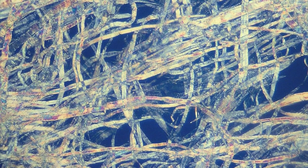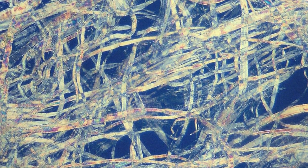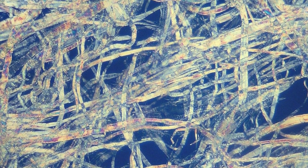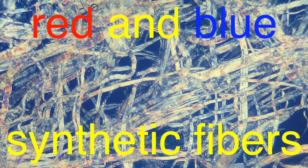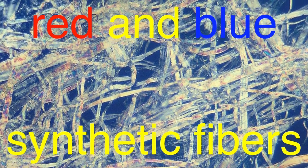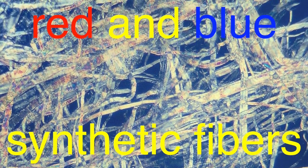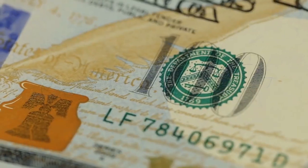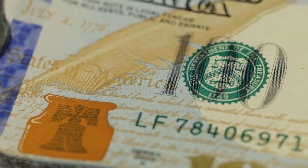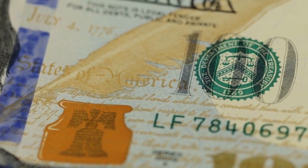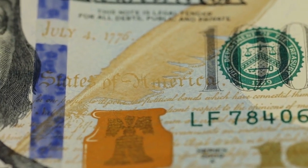The fibers used in this special paper are also embedded with security features, such as red and blue synthetic fibers that are mixed into the paper pulp. These fibers are visible to the naked eye and add another layer of security against counterfeiting.